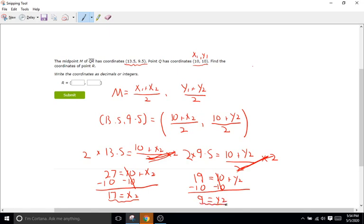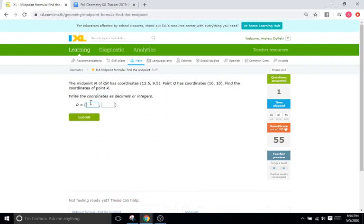And that's it. So our coordinate endpoint is going to be 17, 9. So let's plug that in. We have 17, 9.